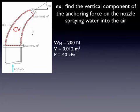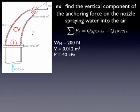So the first thing we do is define our control volume. Pretty obvious what we want to define. We've got two surfaces where we have flux crossing our control volume: surface one and surface two. We can now write our conservation of momentum and we're just going to use the z component, because that's what we're interested in — that vertical anchoring force. We've got two fluxes: at surface two it's exiting so that term is positive, and at surface one it's entering so that term is negative.